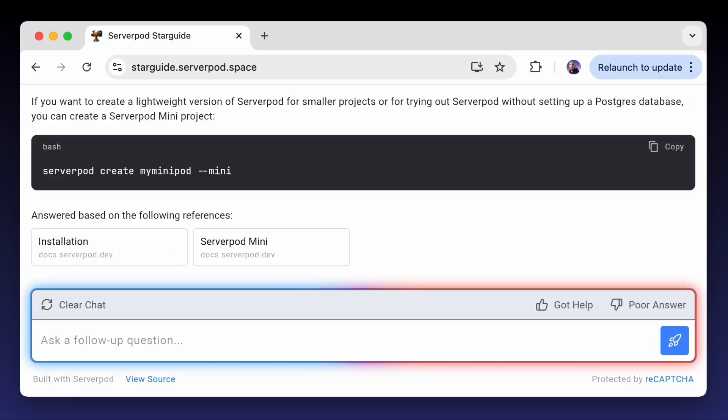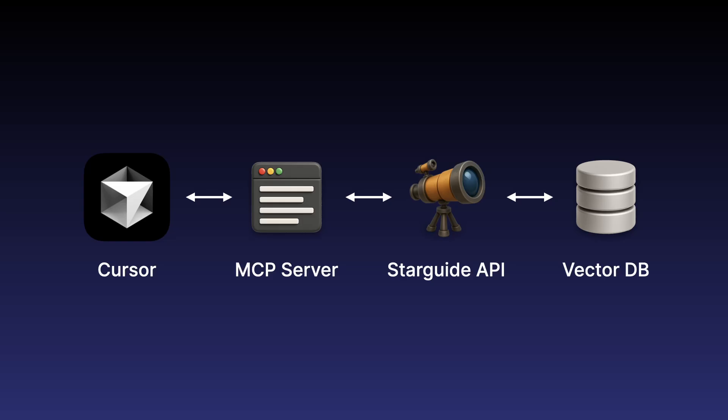StarGuide uses a vector database and retrieval augmented generation to find relevant documentation and GitHub discussions, then crafts an answer. It's all open source if you want to see how we did it. When building our MCP server, we connected it to StarGuide. Now, when you use an agent like Cursor, it can connect to the MCP server, which can in turn ask StarGuide questions in natural language. StarGuide looks up relevant information and passes the answer back to the MCP server, which in turn passes it back to the coding agent and uses it as part of its context. This hugely improves the performance of the agent, making ServerPod vibe-codable.